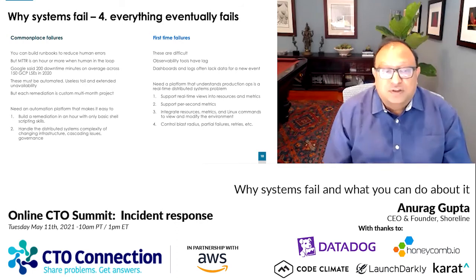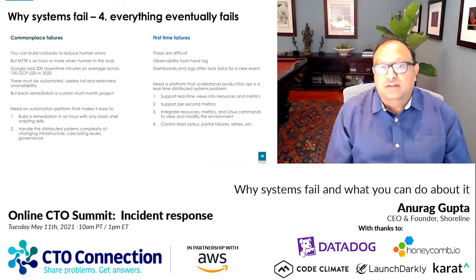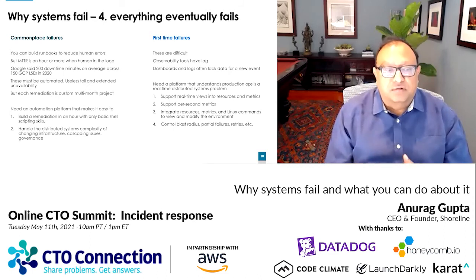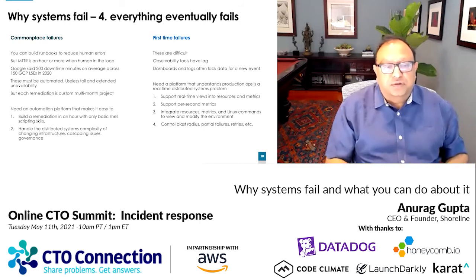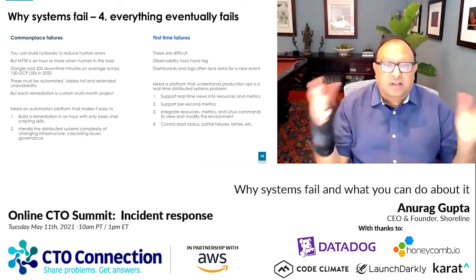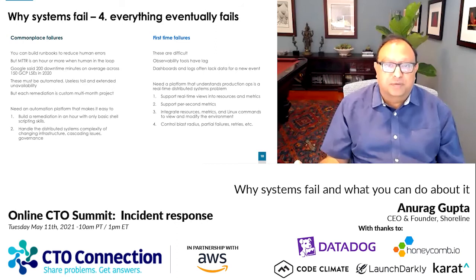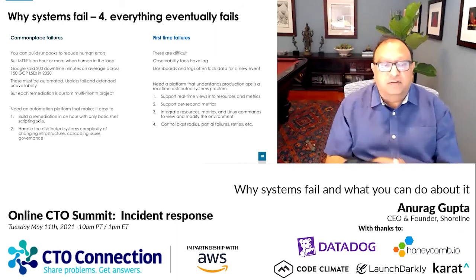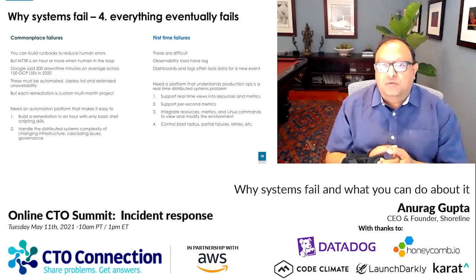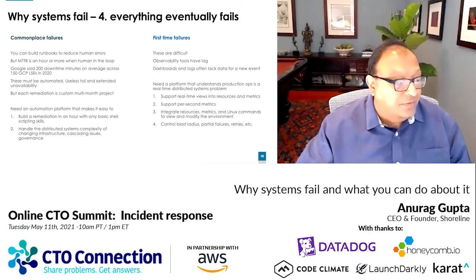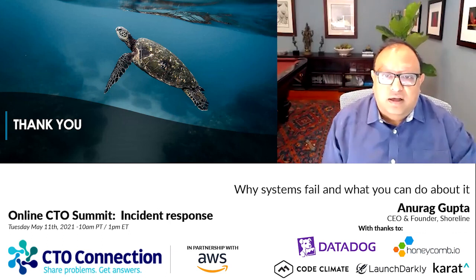The other big space is first-time failures. Those are fundamentally hard because observability tools have lag, and dashboards and logs often lack data for a new event. You end up having to open a blizzard of SSH windows. Production ops is a real-time distributed systems problem. What you want is a system that supports real-time views into changing resources and metrics per second, integrating a view into resource metrics and Linux commands — basically a distributed system that looks like a single system image, where you can view and modify the environment while the system controls blast radius, partial failures, retries, et cetera. That's more of what we're trying to build at Shoreline. Thanks very much, and reach out if you have any questions.